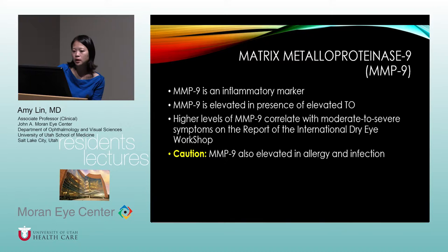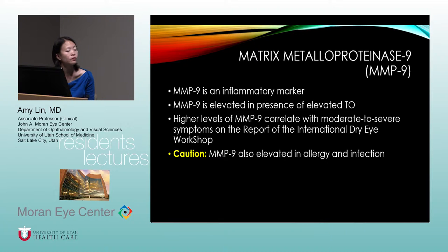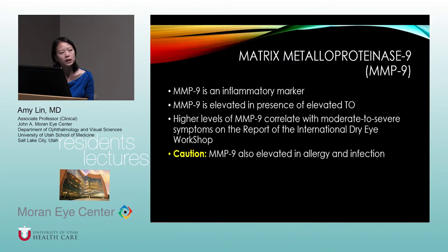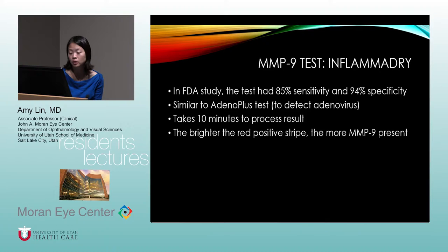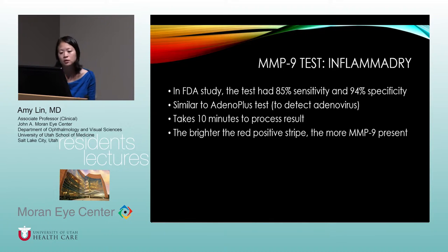MMP9, or matrix metalloproteinase 9, is an inflammatory marker elevated in the presence of elevated tear osmolarity. Higher MMP9 levels in tears correlate with moderate to severe symptoms on the International Dry Eye Workshop scale. It is somewhat nonspecific since MMP9 is also elevated in allergy and infection, but in the right clinical setting it's very useful. The Inflammadry test showed 85% sensitivity and 94% specificity in FDA studies.